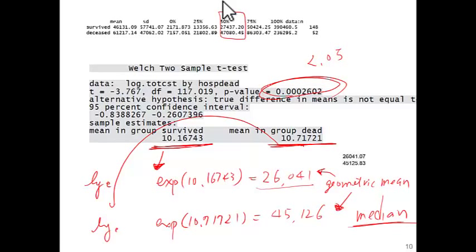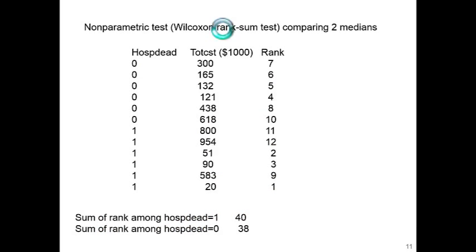Many univariate tests, univariate means non-regression form of test, t-test is one of them, come with non-parametric tests. So instead of log-transforming data, you might directly compute these two medians. To do that, we will proceed to perform Wilcoxon rank sum test.